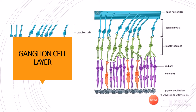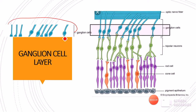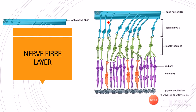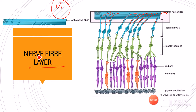Next is the ganglion cell layer, where only the ganglion cell nuclei are present. The ganglion cells then send processes which form the nerve fiber layer — the ninth layer — which is formed by the processes of the ganglion cells. These processes converge and finally form the optic nerve, so this layer can also be called the optic nerve fiber layer.